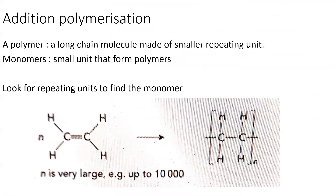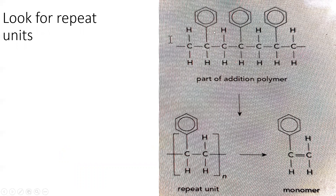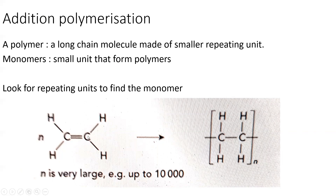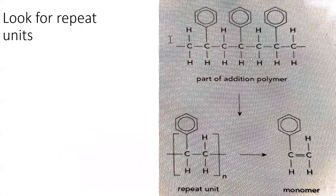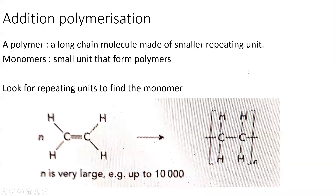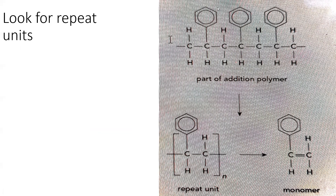Next up we have addition polymerization. A polymer is a long-chain molecule made up of small repeating units, and a monomer is the small unit that forms polymers. Alkenes are monomers and they produce a polymer. Drawing the alkene with a double bond represents the monomer; drawing it with brackets and n represents the polymer, where n is the number of moles of alkene. In addition polymerization, the double bonds break and form single bonds with other similar molecules. To find the monomer from a polymer, look for the repeating two-carbon unit and place a double bond between them.